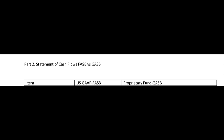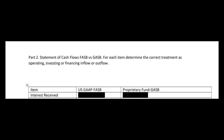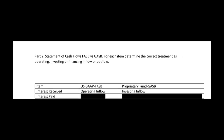This SIM looks at the statement of cash flows from the standpoint of FASB versus GASB. For each item, determine the correct treatment as operating, investing, or financing inflow or outflow. Keep in mind that GASB has two financing sections. Interest received: FASB says interest received is an operating inflow, but under GASB for proprietary funds, interest received from investments is treated as an investing inflow — a key difference between FASB and GASB.